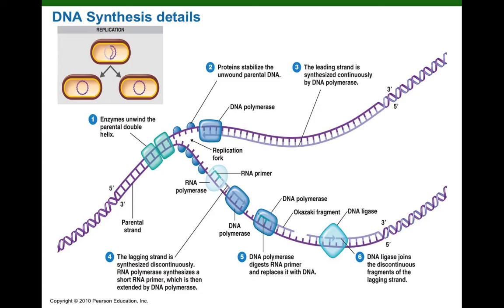Now DNA polymerase — the big workhorse in E. coli — is called DNA polymerase 3, and it can continue synthesizing complementary DNA. I'm going to switch from looking at this strand of DNA that's being synthesized and take a look up here at this other strand of new DNA being synthesized.